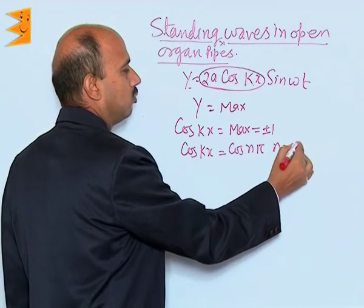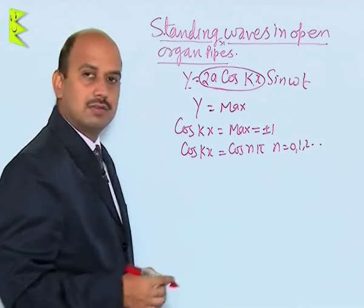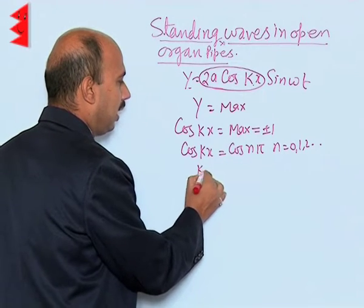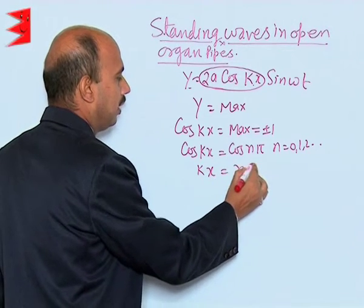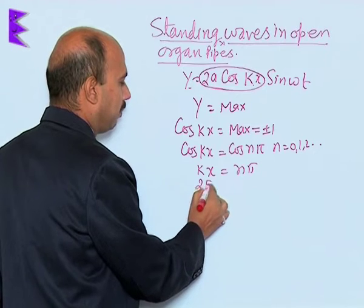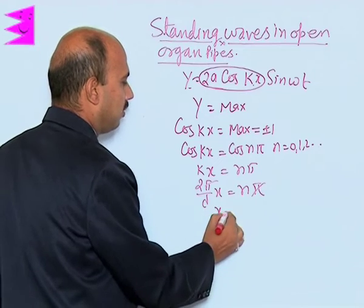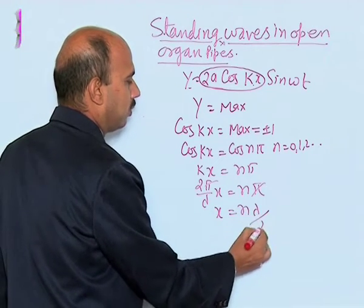Here we can write kx equals nπ, and 2π/λ × x equals nπ. This cancels, so x equals nλ/2.